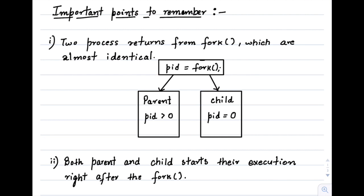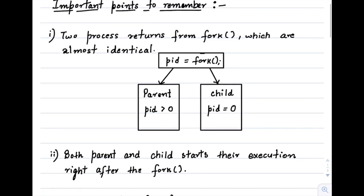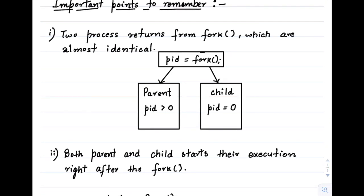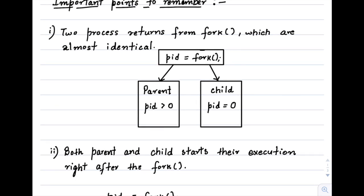The first important point is about processes. When a process is created using fork, two processes return from the fork which are almost identical. There are some differences between the parent and the child process that I've discussed in previous videos. When we have the code 'PID = fork()', two different processes will return — only one new process is created, that will be the child. The parent is already there. The difference is that PID will be greater than 0 for the parent process (it will be the PID of the child), and for the child, the PID will be 0. These two processes will now run differently.